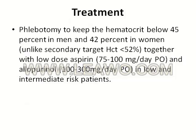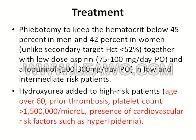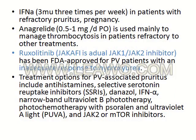Treatment for polycythemia vera: the main treatment is phlebotomy. The other treatment is hydroxyurea. We categorize patients into low-risk, intermediate-risk, or high-risk. If age is over 60, there is prior thrombosis, platelet count is more than 1,050,000, or cardiovascular risk factors such as hyperlipidemia are present, the patient is high-risk and hydroxyurea is added. Other agents include interferon and anagrelide — an antiplatelet agent used to manage thrombocytosis. Ruxolitinib (Jakafi), a dual JAK1/JAK2 inhibitor, is used in patients with inadequate response to hydroxyurea. Treatment for polycythemia vera-associated pruritis is also addressed.